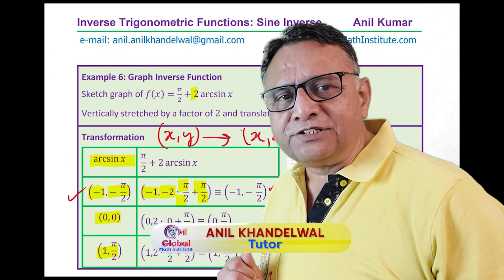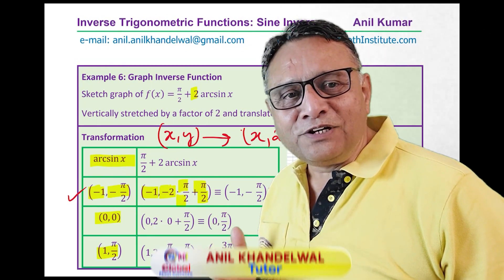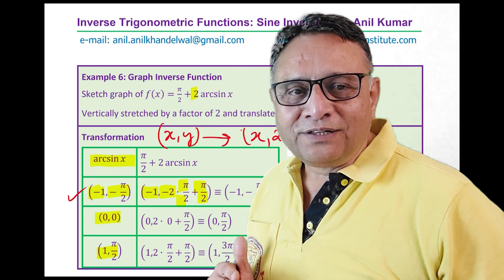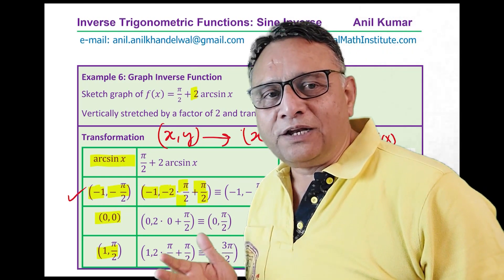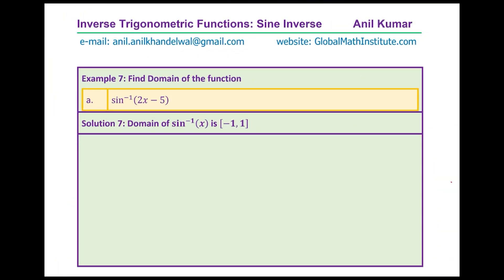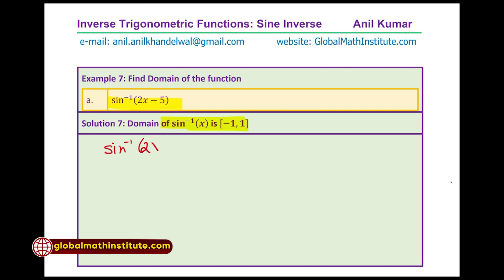Finding the domain is a very challenging process, but here is a very easy method. The inverse of sine function has a domain between minus 1 and 1. Therefore the argument must be placed in the center and the inequality solved between minus 1 and 1. For the second-to-last question, find the domain of sine inverse of 2x minus 5.